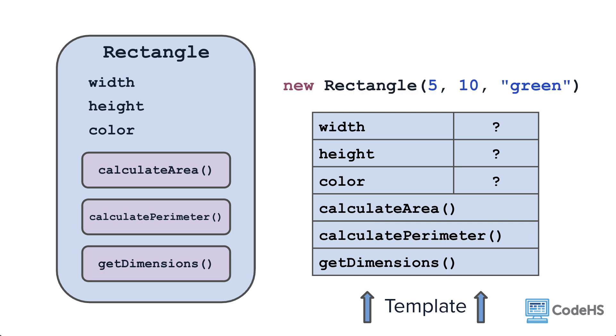Every time that a new rectangle object is created, the class uses this template, filling in any unique attributes as needed. A different call to the class would result in a different object with different values for its attributes.